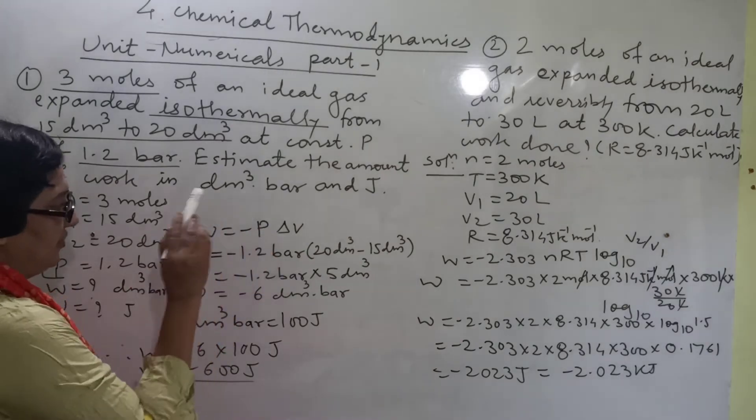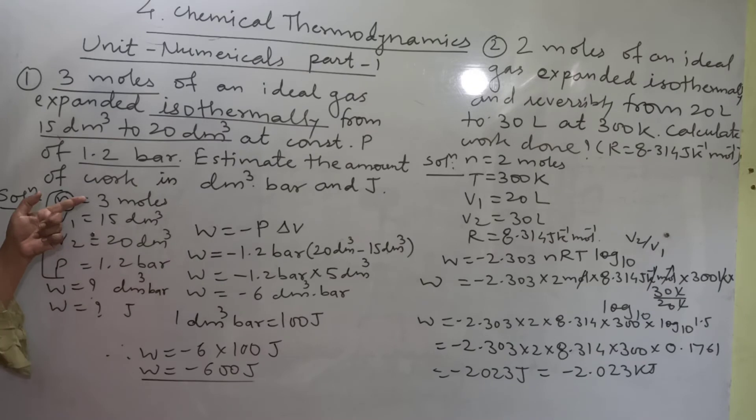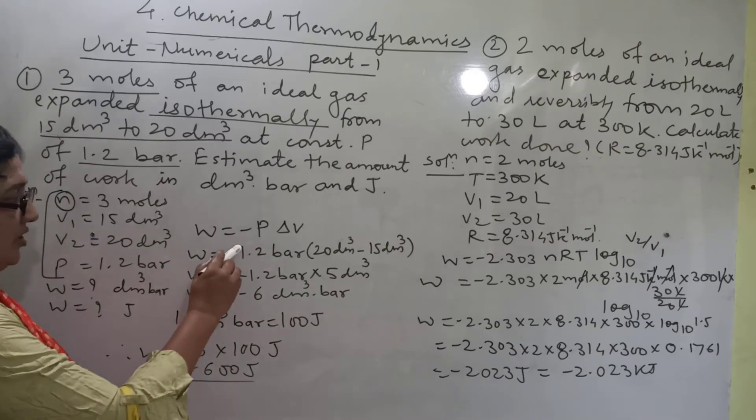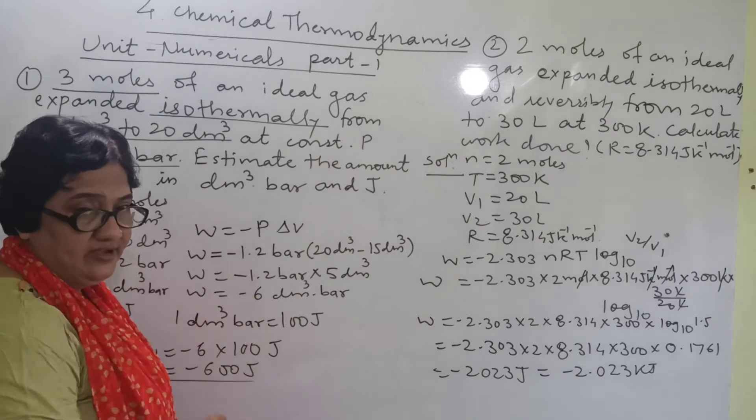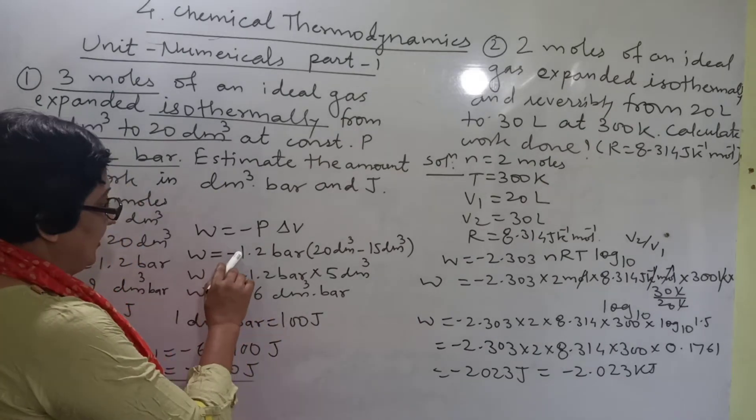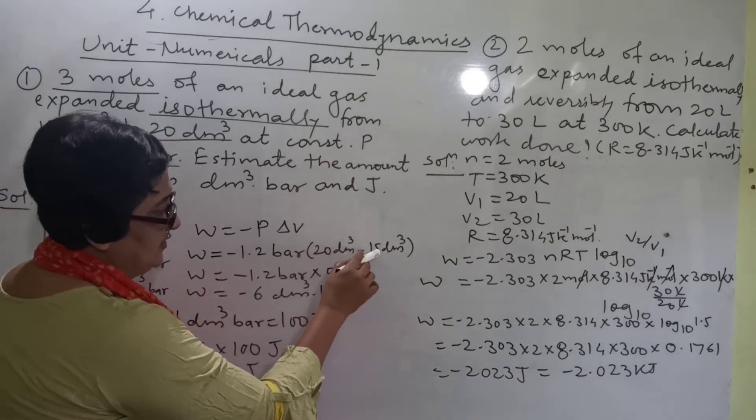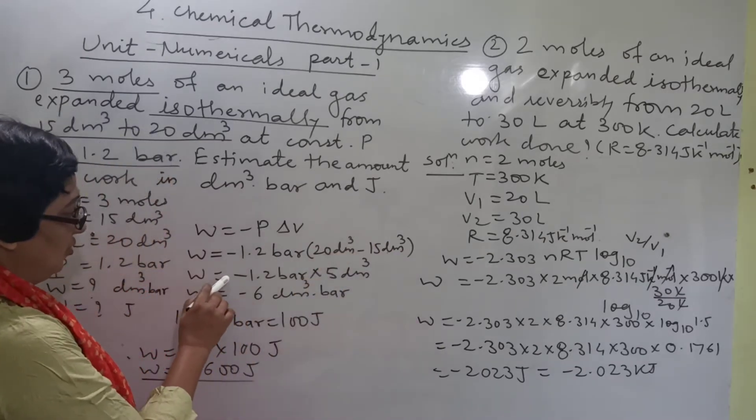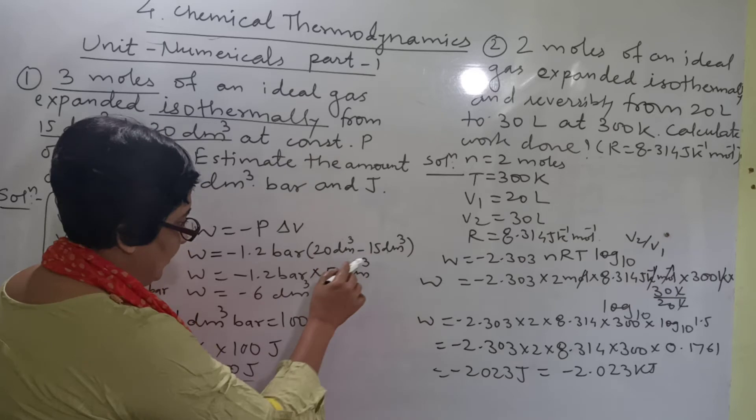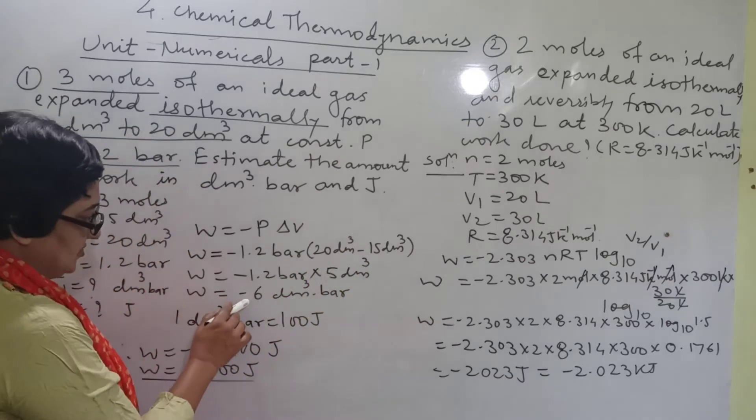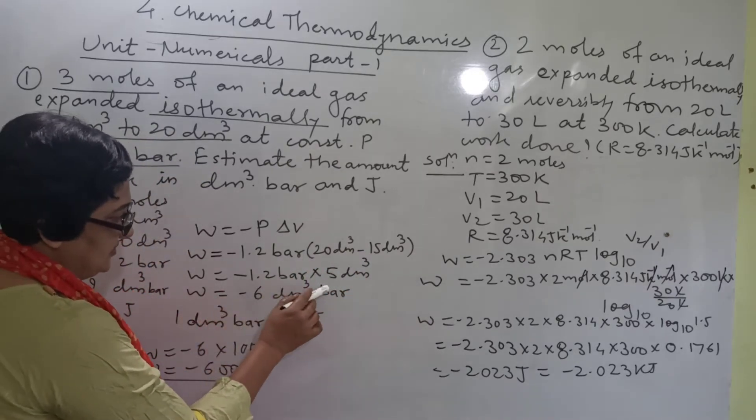Write down first the formula: minus P delta V. All the data is given, put up the values with unit so the final answer has unit. Minus 1.2 bar, 20 cubic decimeter minus 15 cubic decimeter. So minus 1.2 bar into 5 cubic decimeter, this subtraction.